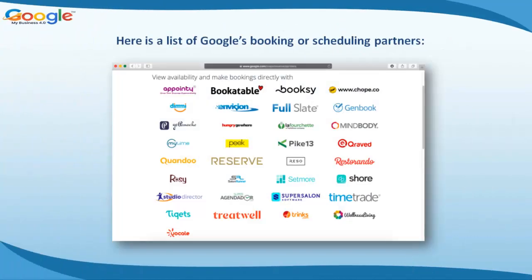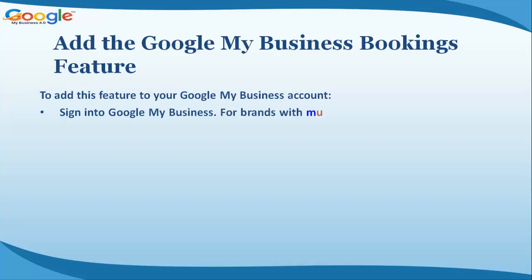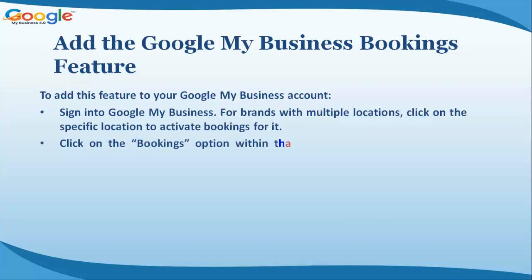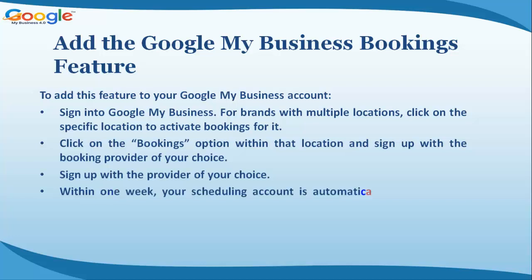Here is a list of Google's booking or scheduling partners. To add this feature to your Google My Business account, sign in to Google My Business. For brands with multiple locations, click on the specific location to activate bookings for it. Click on the Bookings option within that location and sign up with the booking provider of your choice.